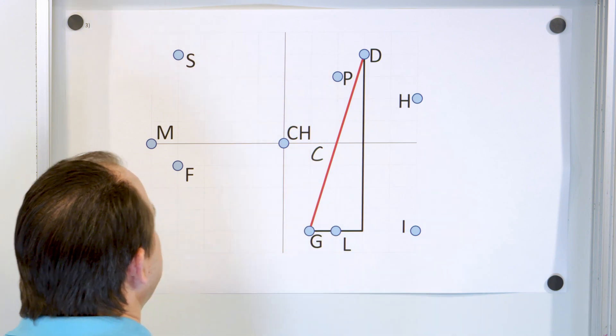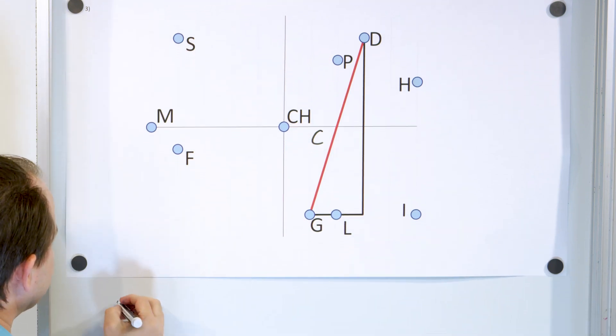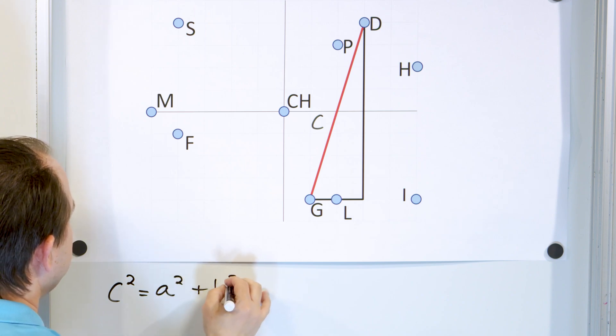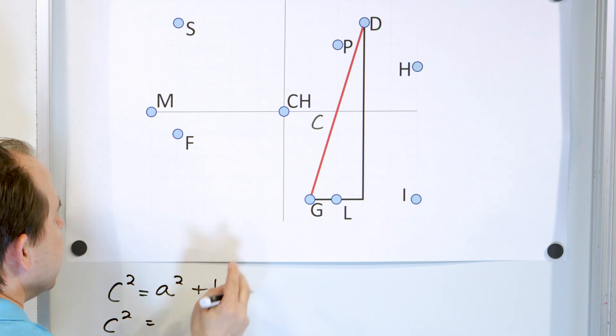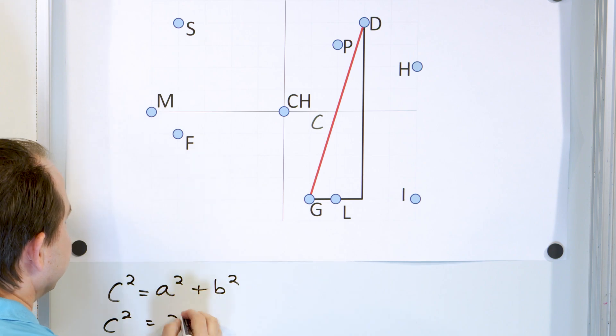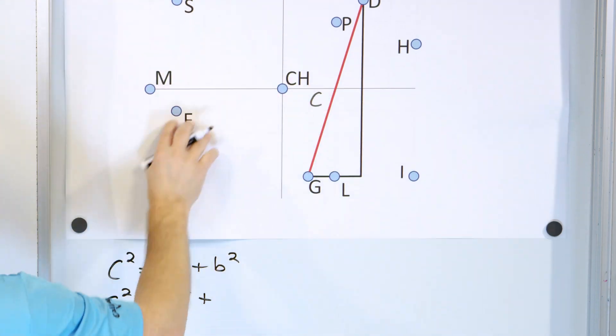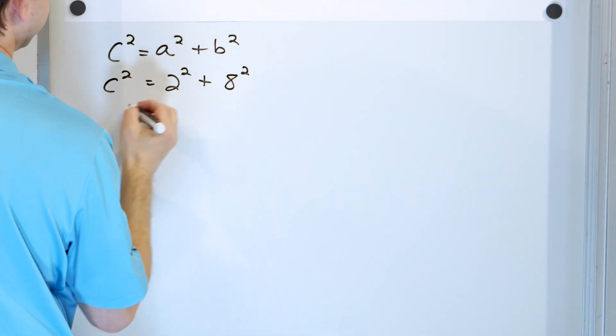And so the red line is the hypotenuse C. So C² = a² + b². So we're trying to find C. I have two distance units here, so 2². And then we have one, two, three, four, five, six, seven, eight in the other direction. So we have 8² up here.